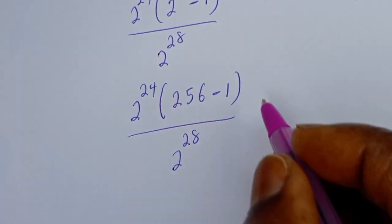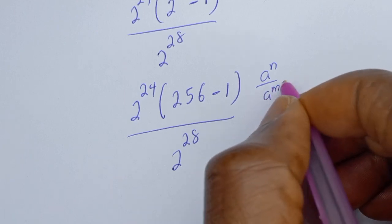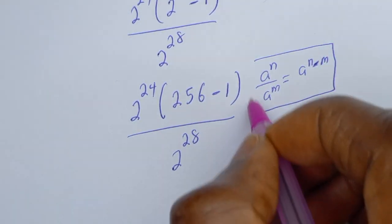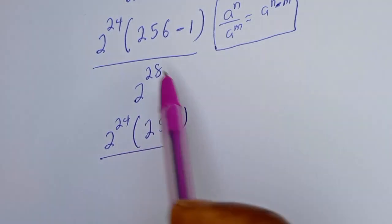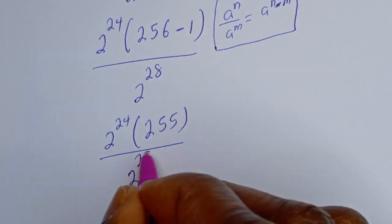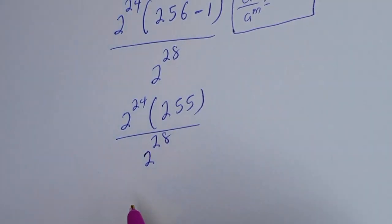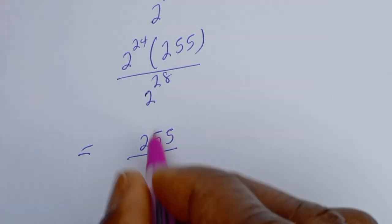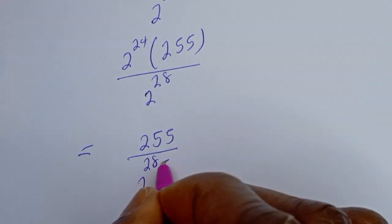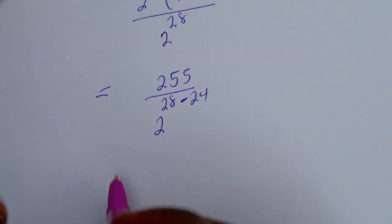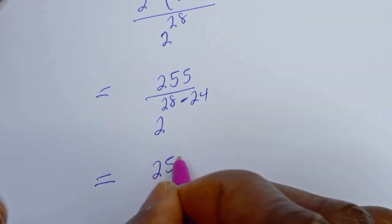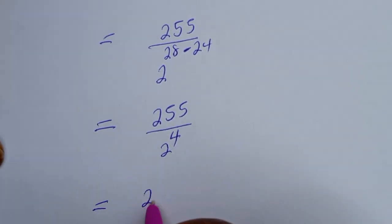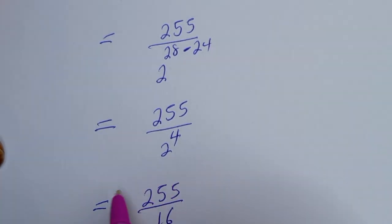Using the rule that a to the power of n divided by a to the power of n equals a to the power of n minus n, we get 255 divided by 2 to the power of 28 minus 24. This equals 255 over 2 to the power of 4, which is 255 over 16. And this is the final answer.